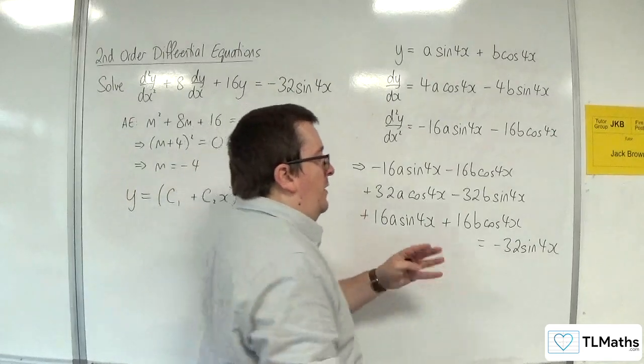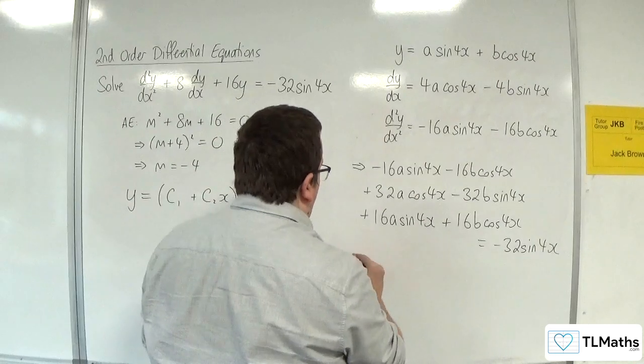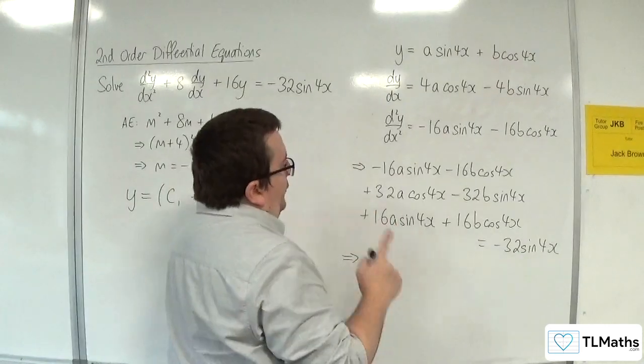OK, so what we're going to do is we're going to group together the sin(4x)'s and the cos(4x)'s. Now for sin(4x),